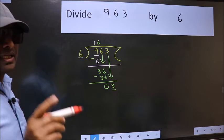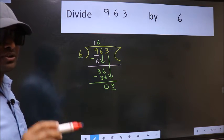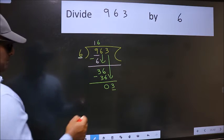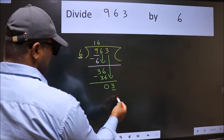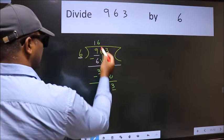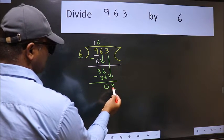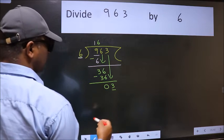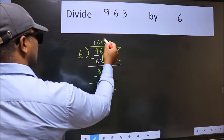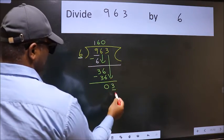Instead of that, what you should think of doing is: which number should we take here? If I take 1, we will get 6, but 6 is larger than 3. So what we do is we take 0. So 6 into 0 is 0.